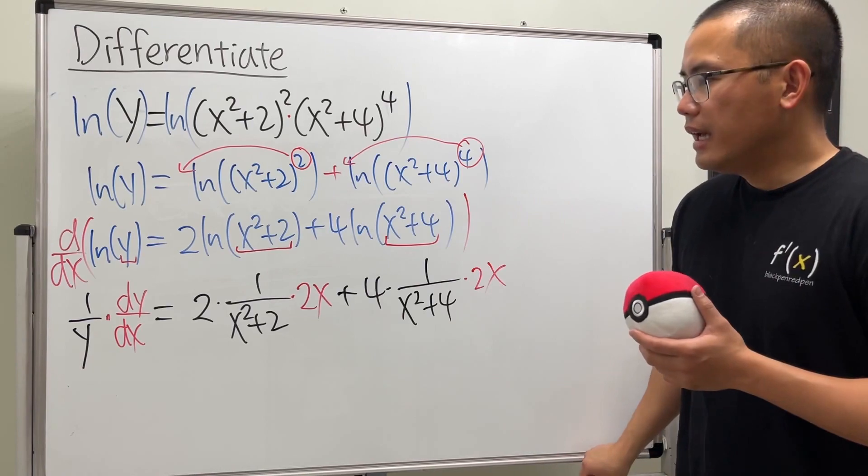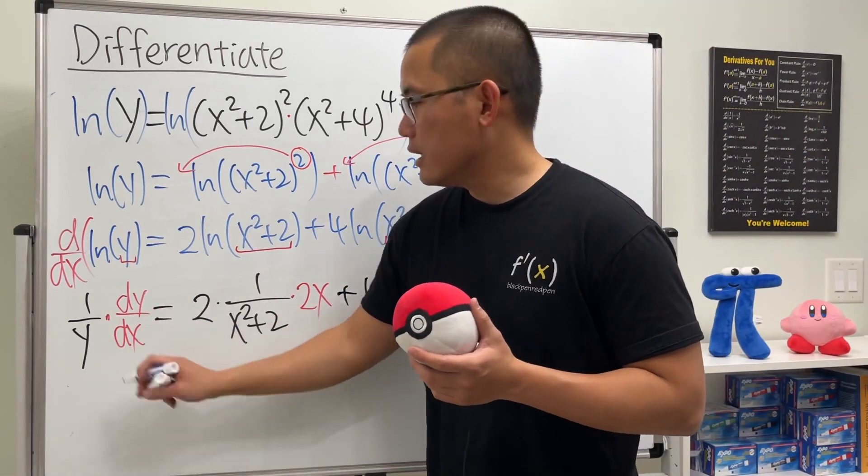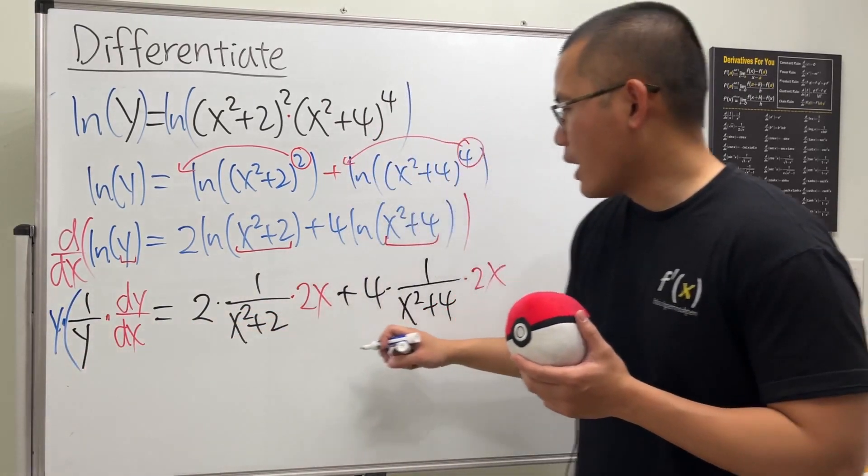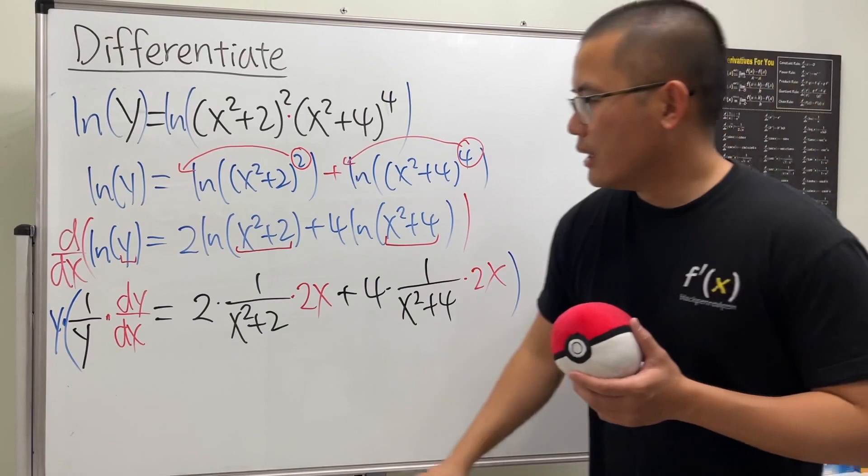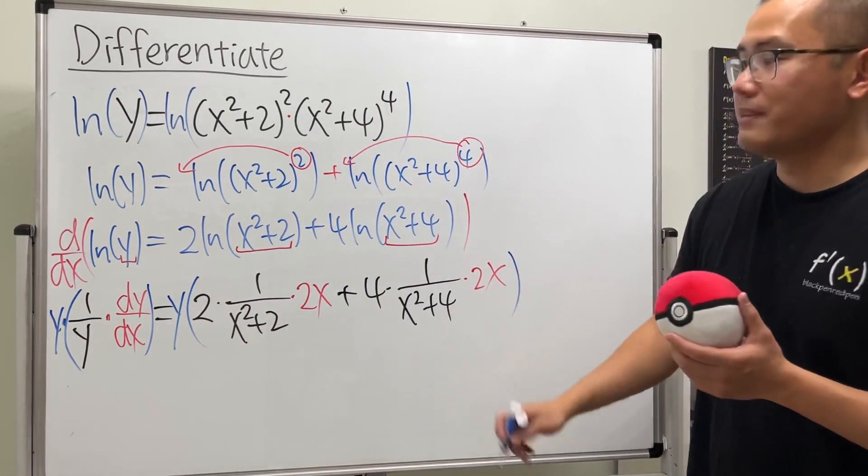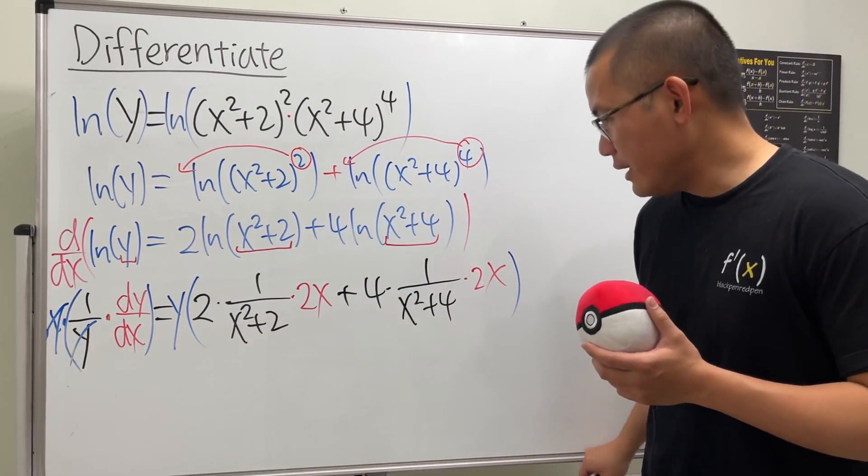So that's pretty much the idea. And in the end though what we want to do is isolate the dy/dx, and we can do so by multiplying the entire equation by y. So I will multiply this by y and I also multiply the whole thing right here by y so that this and that cancel, and then we will just get the dy/dx.